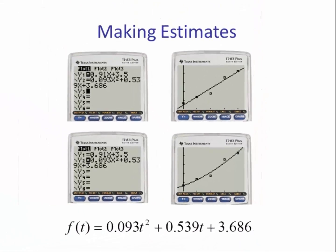So we say f(t) equals the quadratic model, which is 0.093t squared plus 0.539t plus 3.686.